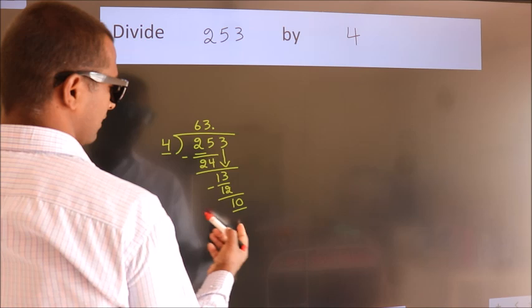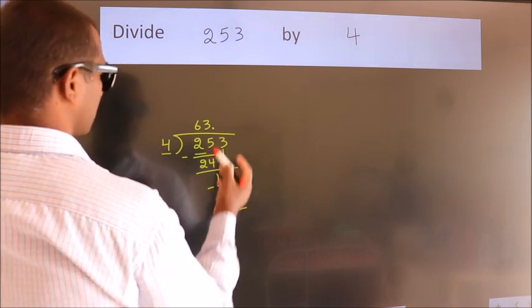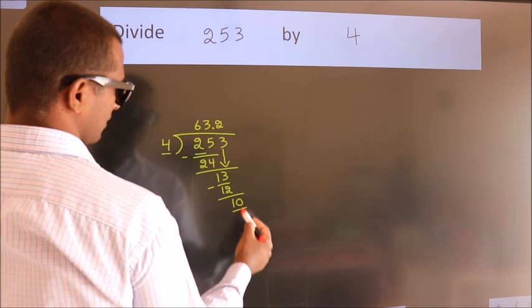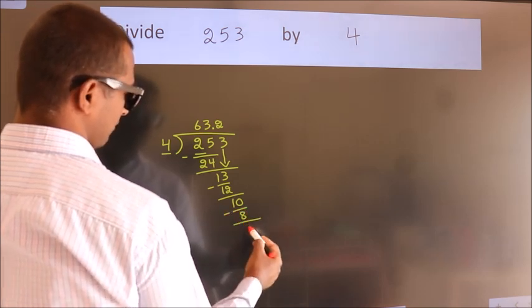So 10. Then a number close to 10 in 4 table is 4, 2's, 8. Now we subtract. We get 2.